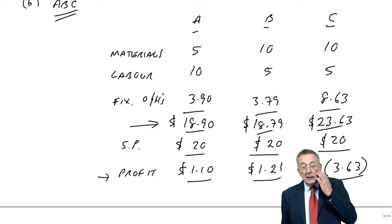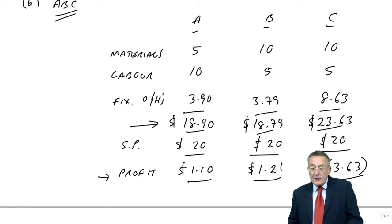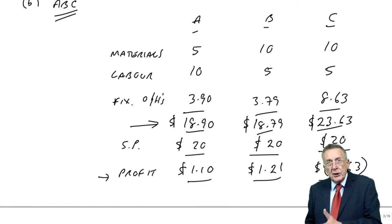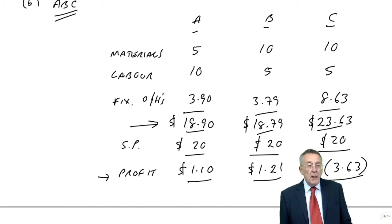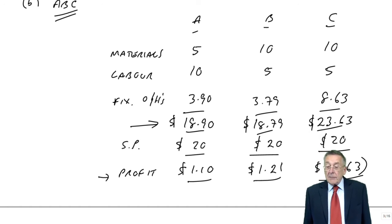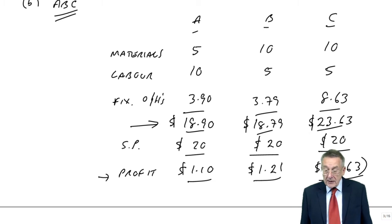using activity-based suggested that it was C that was the problem. C should have a higher price, whereas on tradition it was A. And I'm sure you would agree with me, without me needing to say too much, that activity-based is, I think beyond any doubt, a better approach.